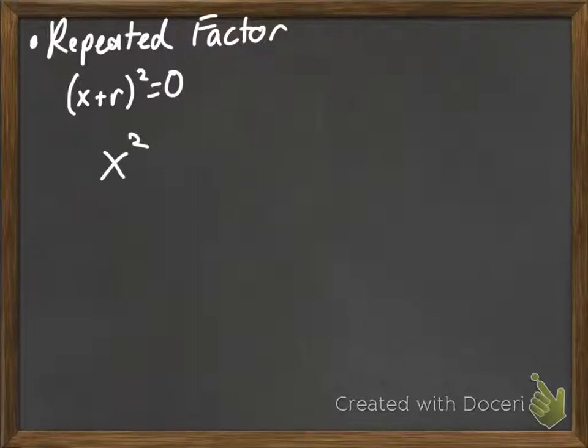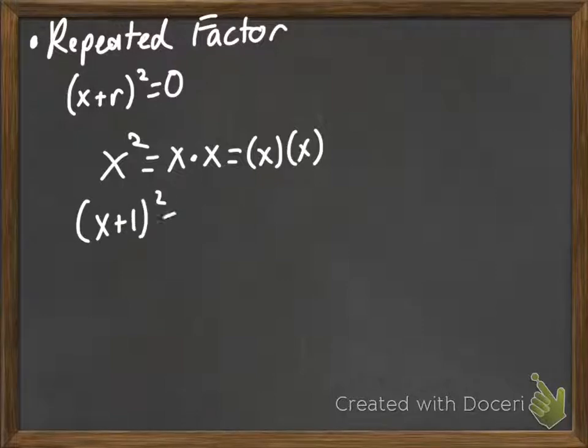If we think about it, let's take x squared. Well, how can we rewrite x squared? We can rewrite it as x times x. Or, another way you can see it written as x times x. Well, if we have x plus 1 squared equals 0, or just without the equaled 0, another way we could write it as x plus 1 times x plus 1.